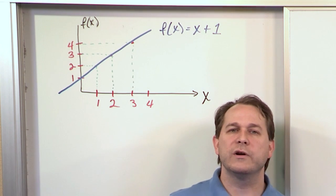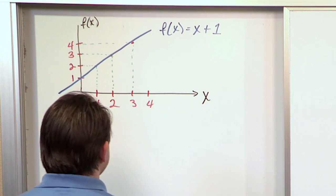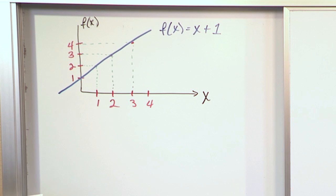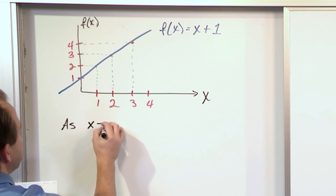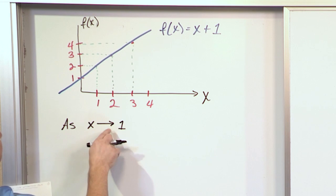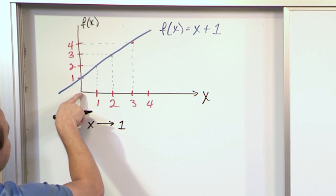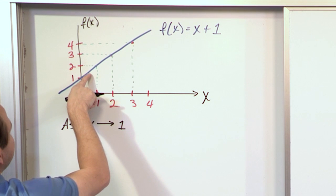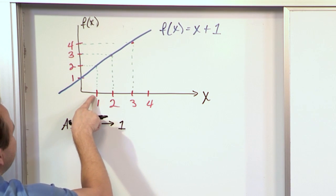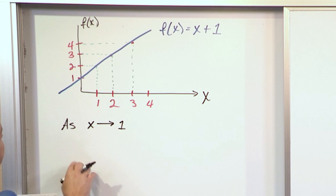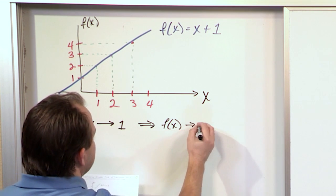The very simple concept of a limit can be easily explained. As we look at the variable x and we approach the number 1 — using an arrow to say x gets closer and closer to 1 — what happens to f(x)? Think of tracing your finger along the line: as you get closer to x = 1, the value of f(x) gets closer to 2. So as x approaches 1, f(x) approaches the number 2. This is the basic concept of a limit: you look at how the function behaves as x approaches some number.